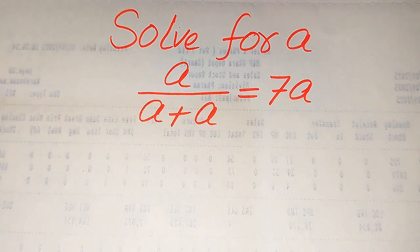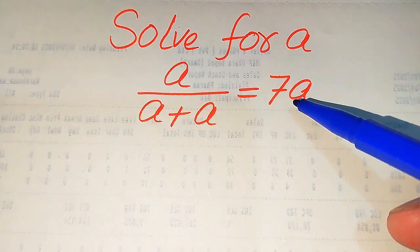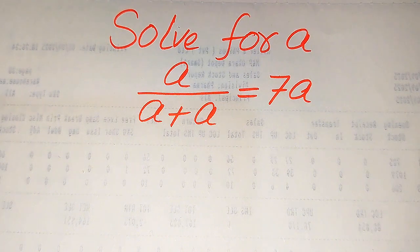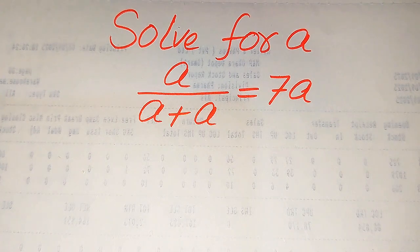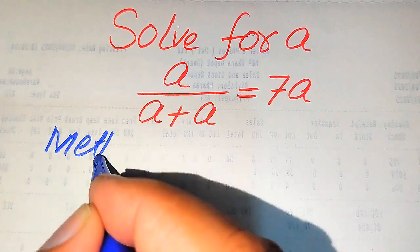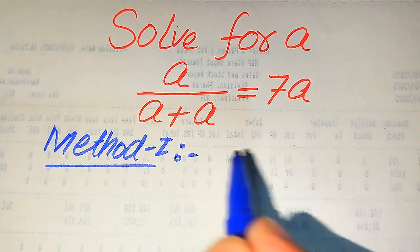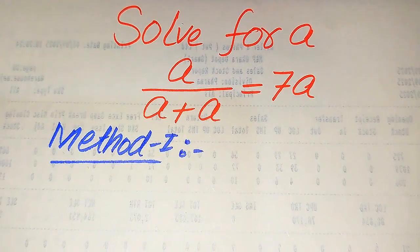Hello everyone. How to solve this problem for the values of a, if we have a divided by a plus a equals seven times of a. We solve this problem for all the values of a. First we need to find all the roots of this equation, and at the end we will verify which of the roots are solutions and which are extraneous roots. We will solve this problem using two methods.